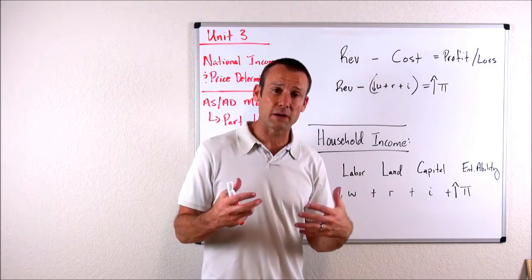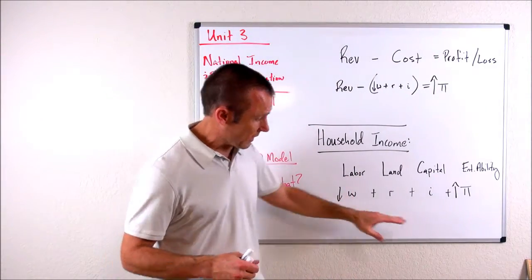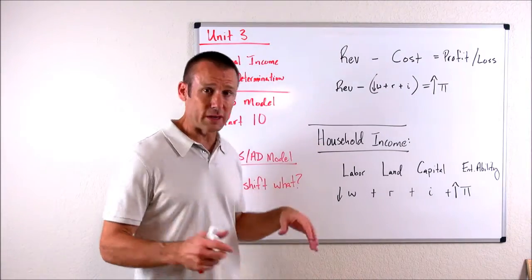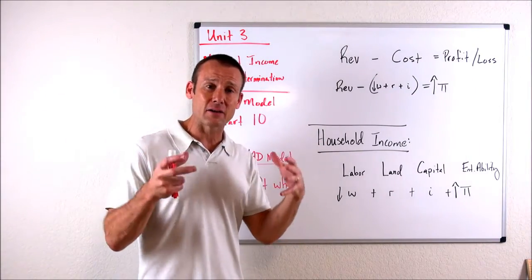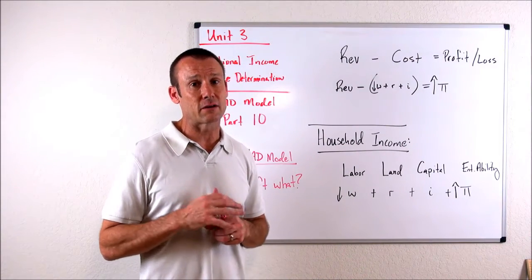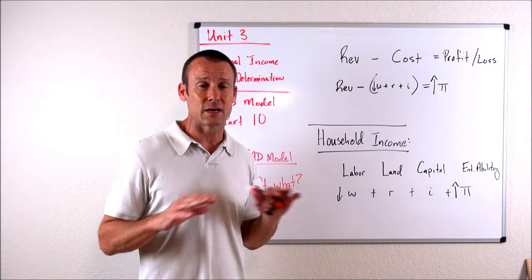So the amount that wages went down, profits will go up by the same exact amount. So household income in the aggregate does not change. Since household income in the aggregate is not changing, AD does not shift.